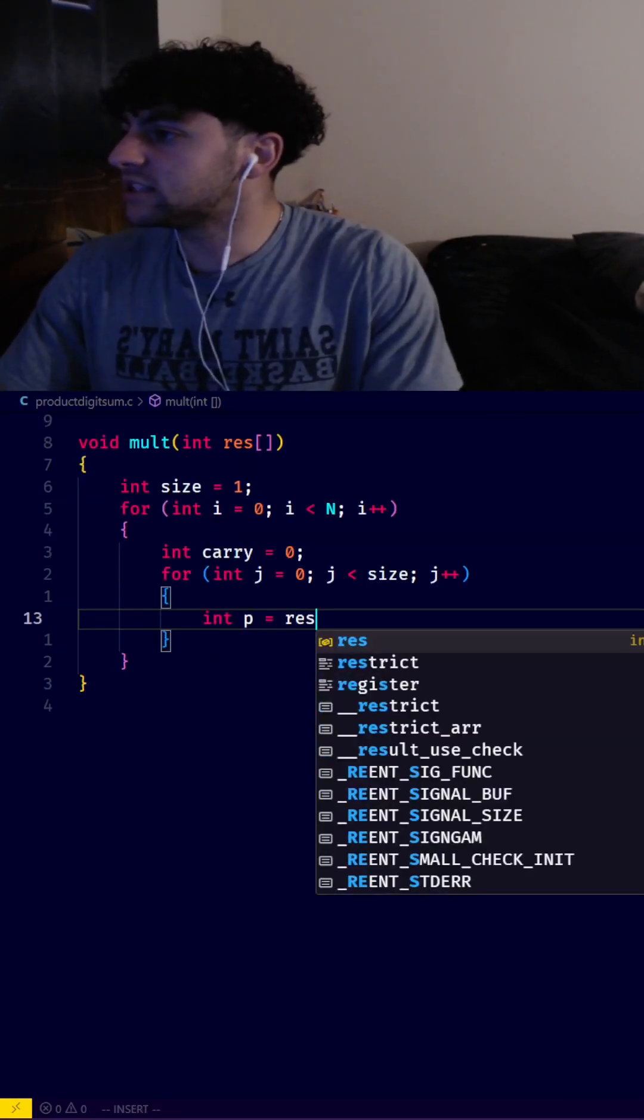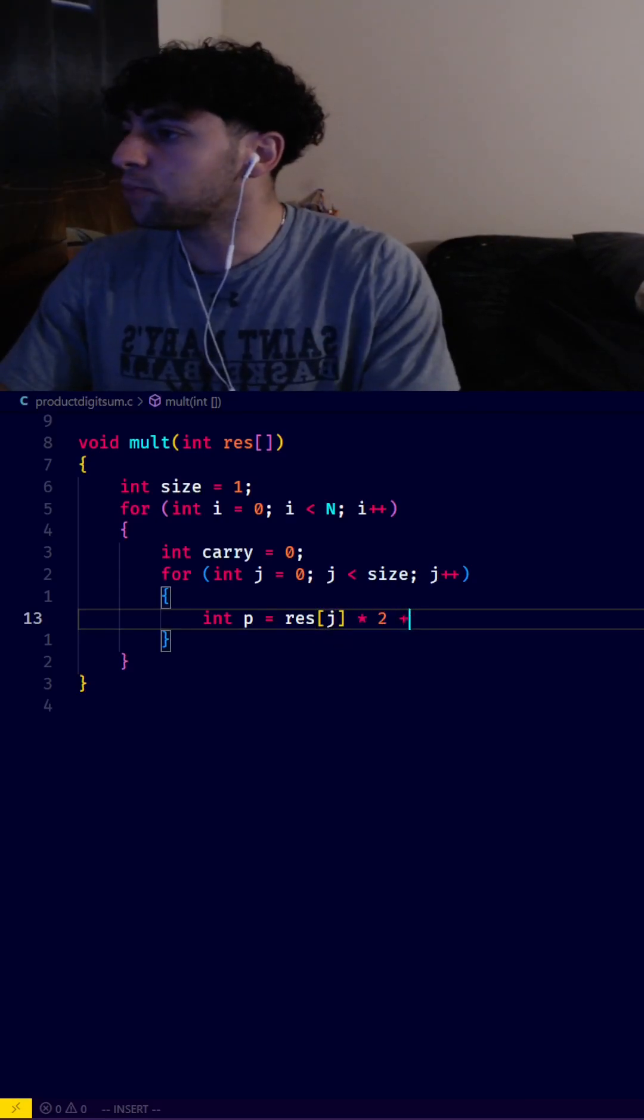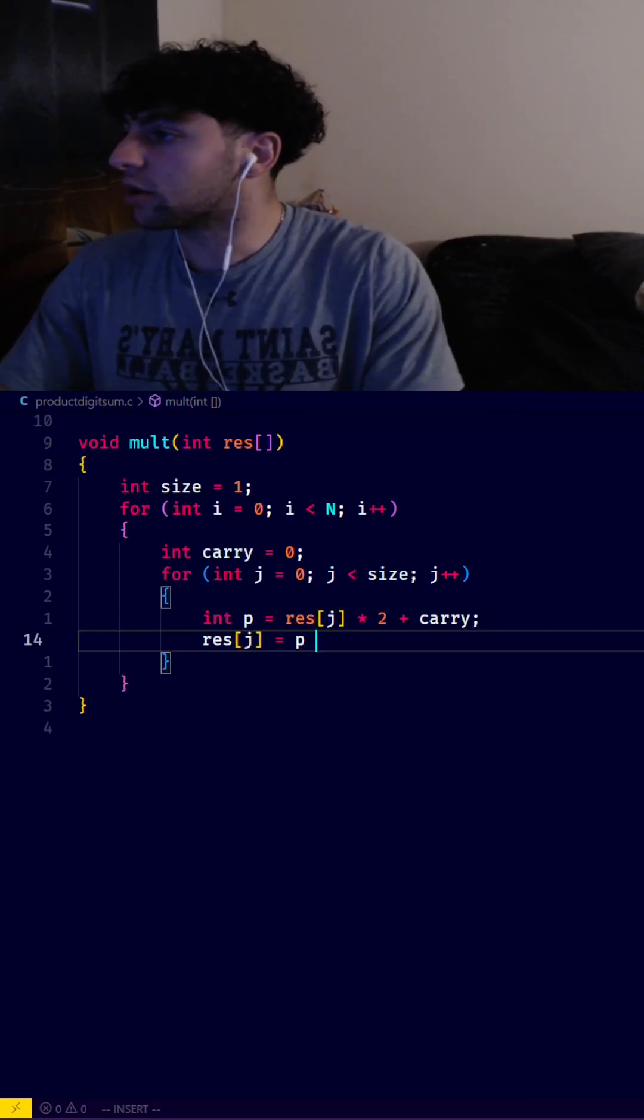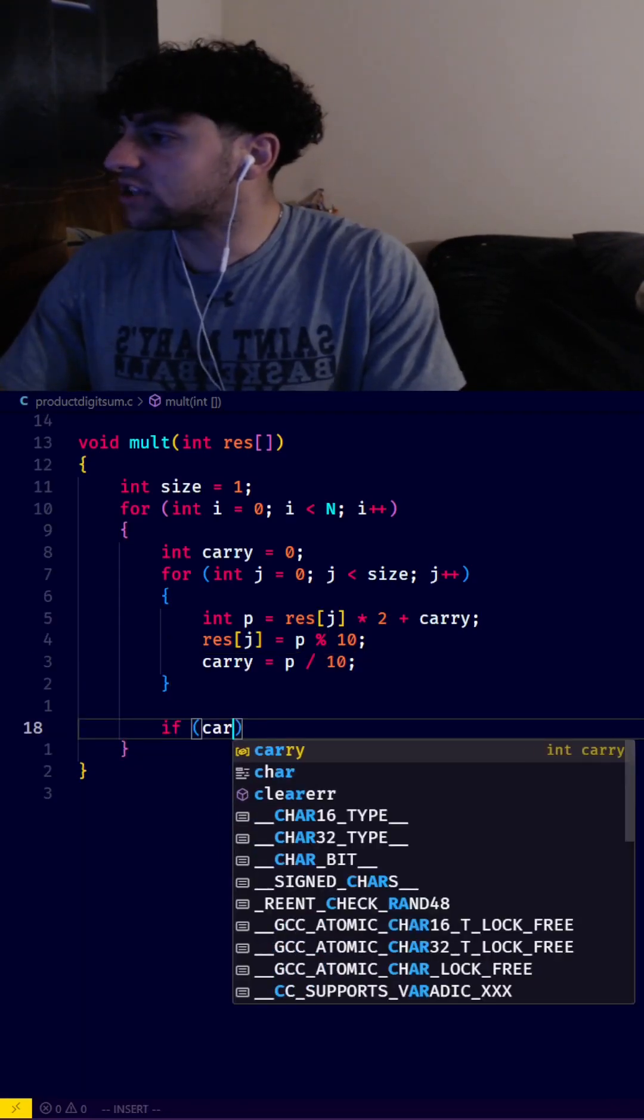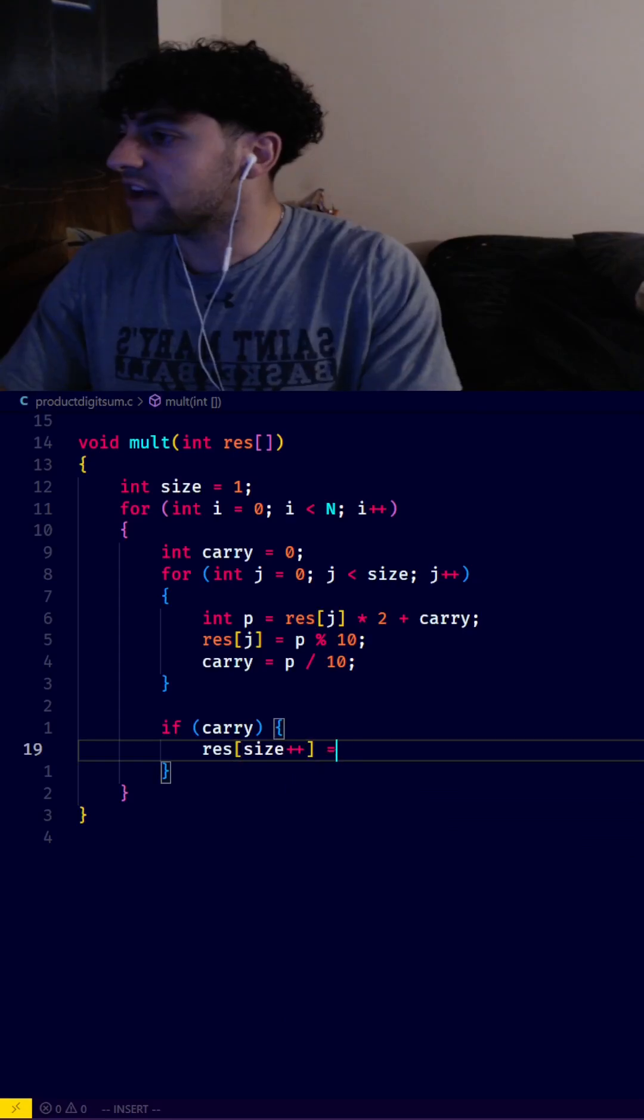In the loop, int p = res[j] × 2 + carry. Then res[j] = p mod 10, and carry = p / 10. Outside this loop, if we still have a carry, we add it to the end of our product.